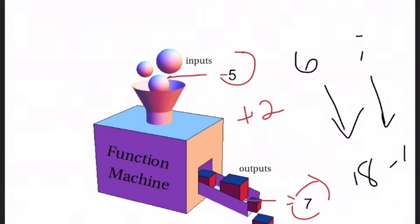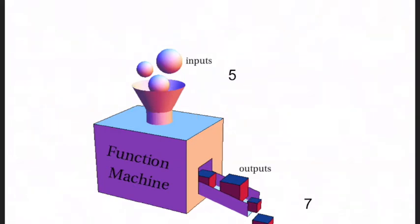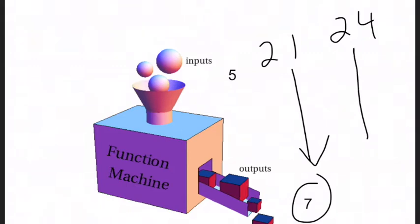Let's just try one more and then we're going to do a bunch together. So let's say you have 21 and the output is 7. You don't know for sure yet because let's try 24 and the output is 8. So you would see that when you go from 21 to 7, 24 to 8, you're dividing by 3.